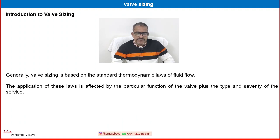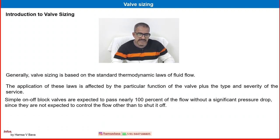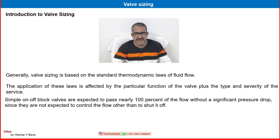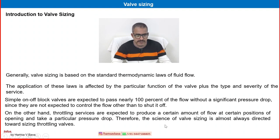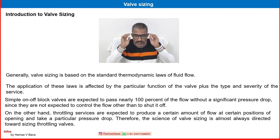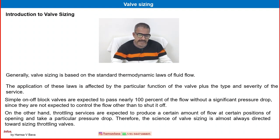Generally, valve sizing is based on the standard thermodynamic laws of fluid flow. The application of these laws is affected by the particular function of the valve plus the type and severity of the service. Simple on-off block valves are expected to pass nearly 100% flow with minimum pressure drop, since they are not expected to control the flow other than to shut off.